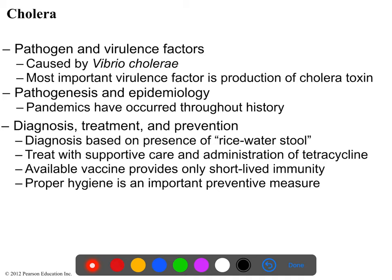Cholera is a very uncommon bacteria in the industrialized world but still exists and causes disease in the developing world. It is caused by the gram-negative bacteria Vibrio cholerae, and the disease is primarily mediated by cholera toxin. The disease is called cholera and the bacteria is Vibrio cholerae. Pathogenesis and epidemiology: it's fecal-oral transmission.